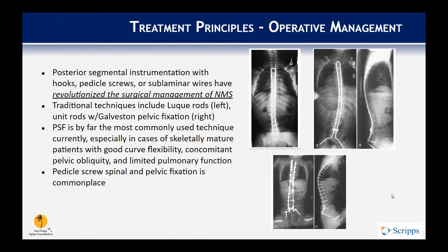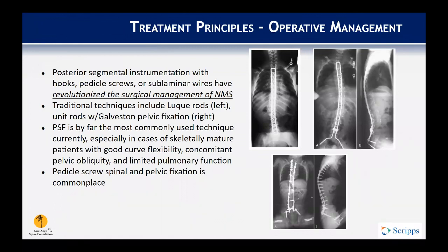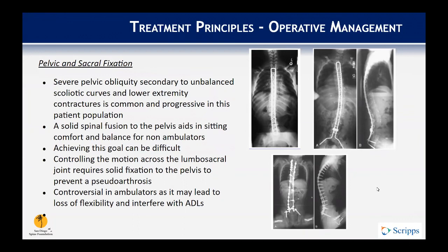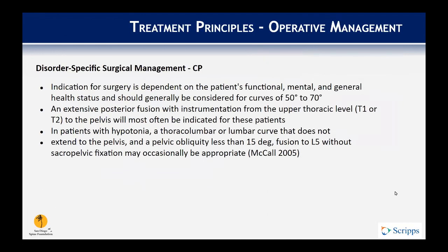Traditional techniques include Luque rod constructs and a Galveston pelvic fixation technique. More recently, pedicle screw fixation and a posterior-based approach have become commonplace. In severe pelvic obliquity, it is important to instrument to the pelvis. Solid spinal fusion to the pelvis aids sitting comfort and balance for non-ambulators. Controlling motion across the lumbosacral joint requires solid fixation, though this is sometimes controversial in ambulators as it leads to loss of flexibility and can interfere with activities of daily living.